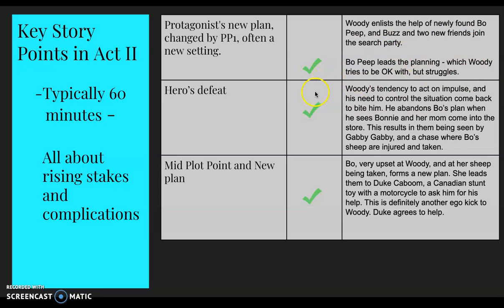We have our hero's defeat: Woody's tendency to act on impulse and his need to control the situation come back to bite him. He abandons Bo's plan when he sees Bonnie and her mom come into the store, resulting in them being seen by Gabby Gabby, a chase, and both sheep taken. Then we have our midpoint new plan, which we're about to discuss.